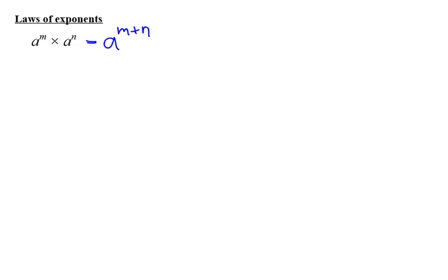The second law says that when I divide exponents with the same base, I write down my base and I subtract exponents. So that will be m minus n.